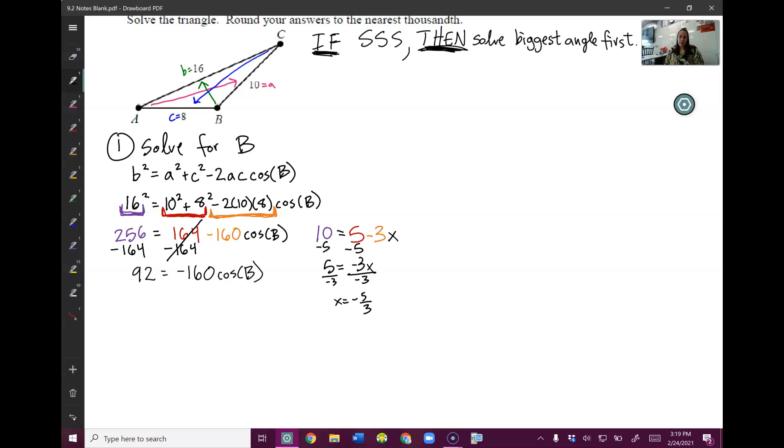So we get 92 equals negative 160 cosine of B. Here is my second pet peeve. Do not add 160. That's wrong. This 160 is timesing to the cosine. So to get rid of it, I need to divide by negative 160. Same thing we did over here. Divided by the negative number to get the x by itself.